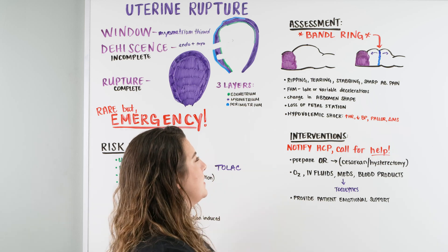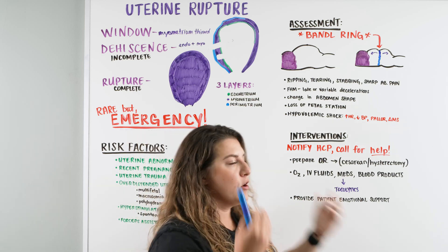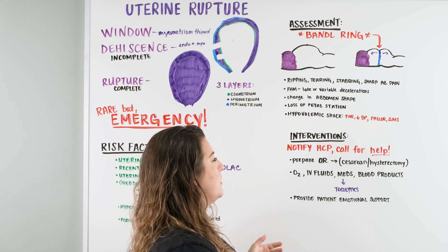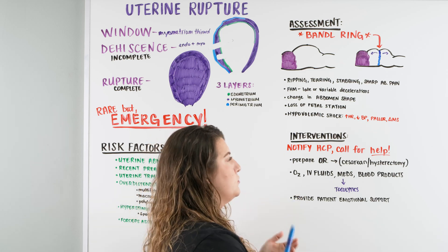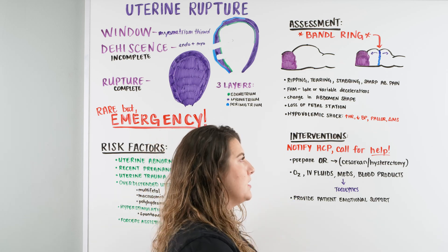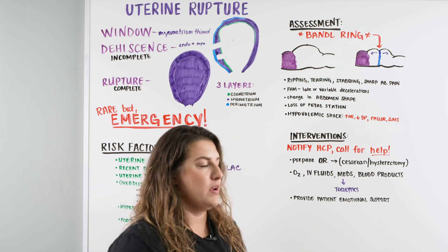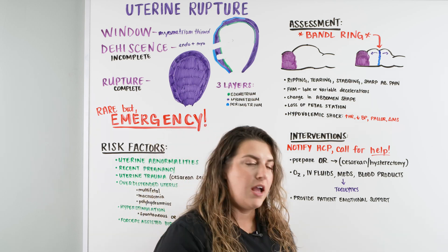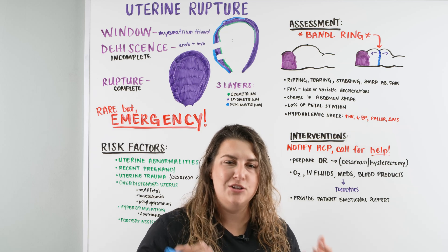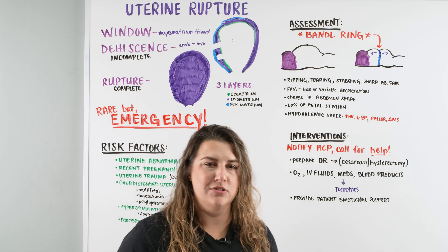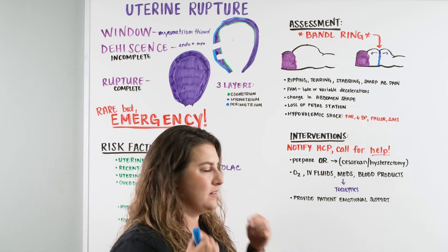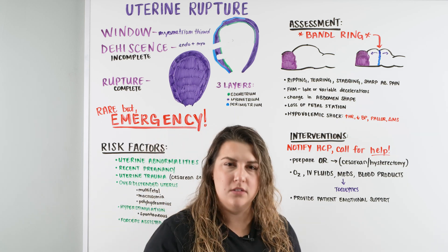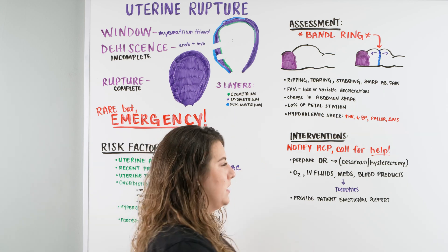Then there are the big signs of hypovolemic shock. Tearing through all three layers means a chance of blood loss. There may be signs of increased heart rate, lower blood pressure, the patient looking pale, and then altered mental status — a change in the patient's neurocognitive status all of a sudden. You're thinking something is different and you need to quickly begin your interventions.